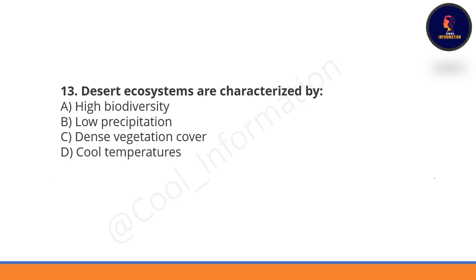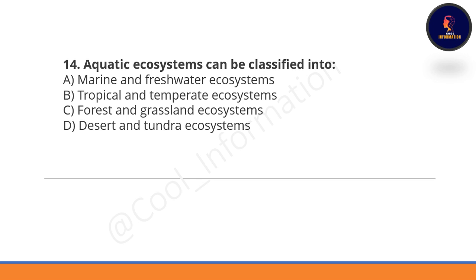Desert ecosystems are characterized by low precipitation. Option B will be correct. Aquatic ecosystems can be classified into marine and freshwater ecosystems.